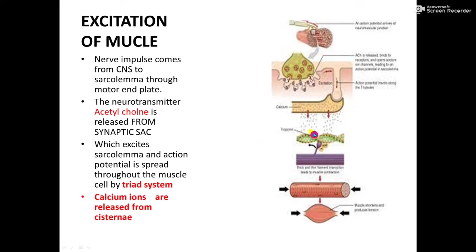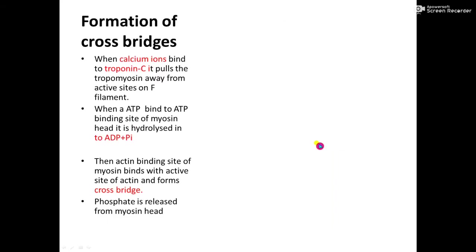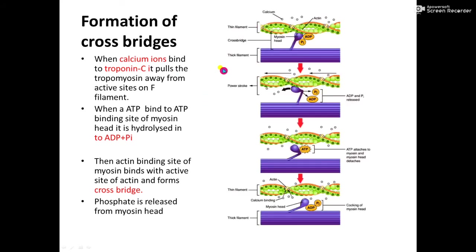Once the calcium ions are attached to the thin filaments, the formation of cross bridges starts. The calcium ions attach to troponin C, and then troponin T moves the tropomyosin away from the active sites of the F-filament. The active sites on the thin filament are thus exposed or unmasked. When this occurs, a change occurs in the myosin — the thick filament. The head of the myosin contains two sites: the ATP binding site and the actin binding site.